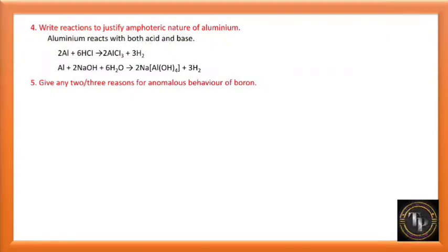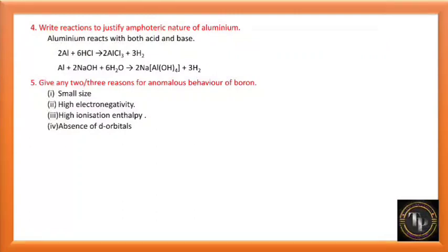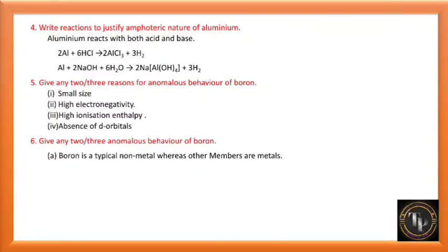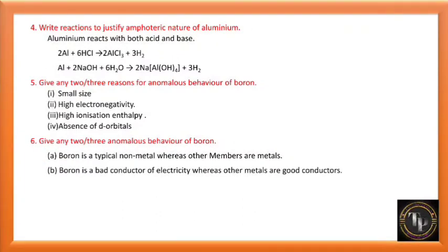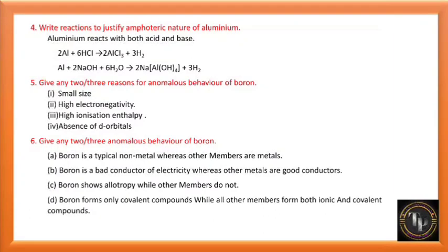Give reasons for anomalous behaviour of boron: smaller size, high electronegativity, high ionization enthalpy, and absence of d-orbitals. What are the anomalous behaviours of boron? Boron is a typical non-metal whereas other members of group 13 are metals. Boron is a bad conductor of electricity while others are good conductors. Boron shows allotropes while other members do not. Boron forms only covalent compounds while all other members form both ionic and covalent compounds.